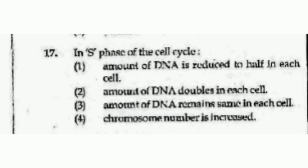In the S phase of the cell cycle — options are: amount of DNA is reduced to half in each cell; amount of DNA doubles in each cell; amount of DNA remains the same in each cell; or chromosome number is increased. The right answer is option number 2, Amount of DNA doubles in each cell.